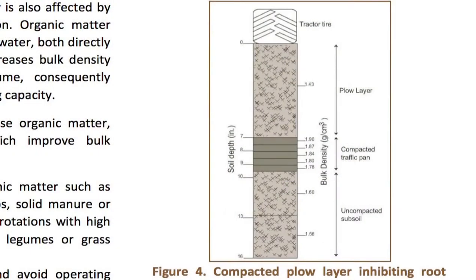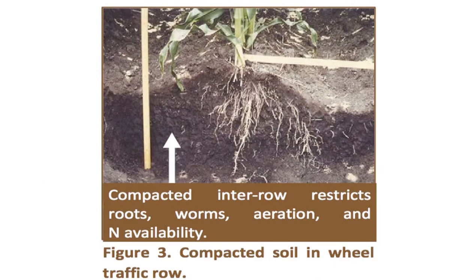In the guide, figure four shows where we have a compacted tillage zone. You can take out a tile spade and quickly find those areas because you have real platey structure in the soils. If you use a tile spade, figure three shows a compacted area from where the roots don't want to go, or they go laterally — so that's really easy to see if you have some bulk density problems.